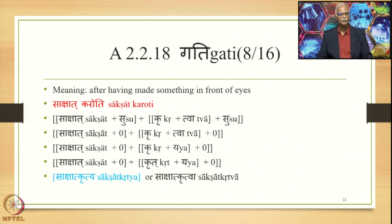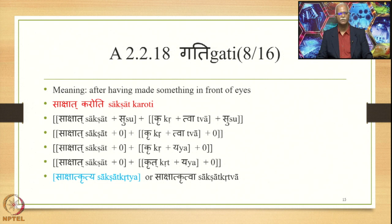Even though Sakshat Kritya and Sakshat Kritya are both written jointly, in the compound form Tvah is substituted by Lepu, whereas in the sentence form that is not the case. So even though they appear joint, Sakshat Kritya consists of two independent words, whereas Sakshat Kritya is one word — a Samasa.